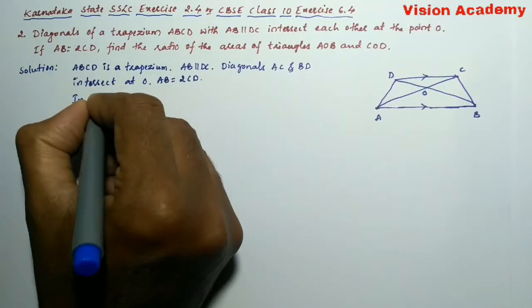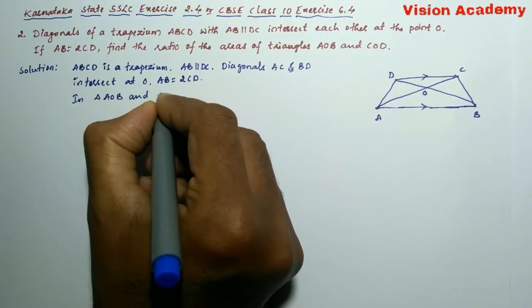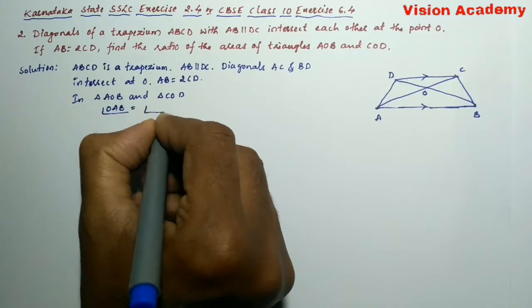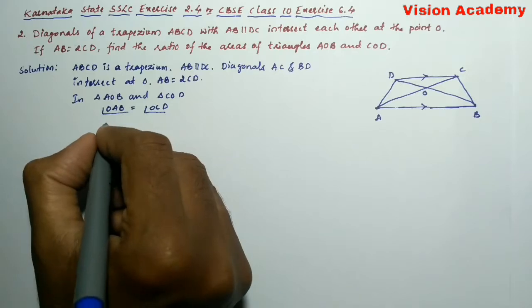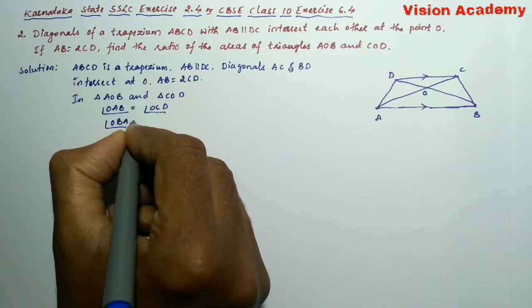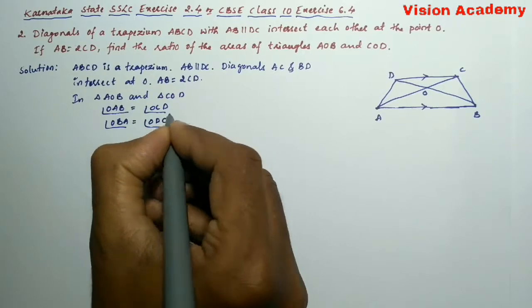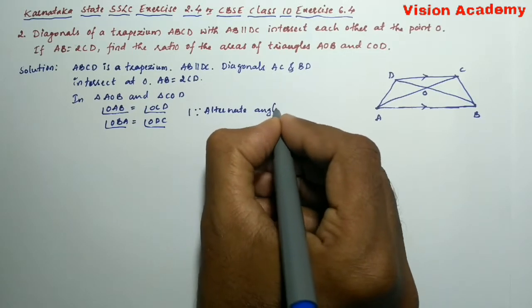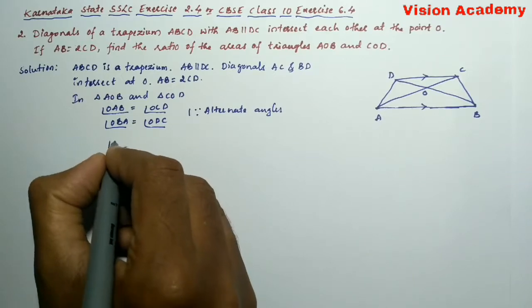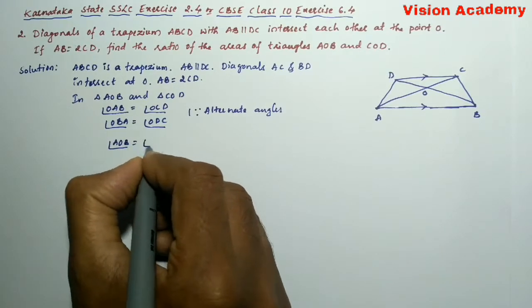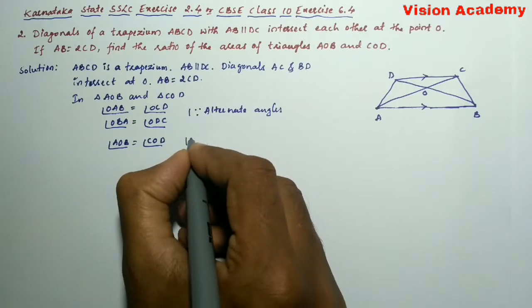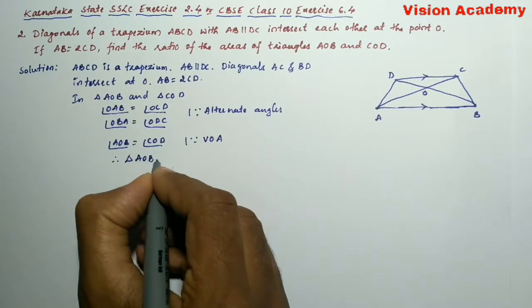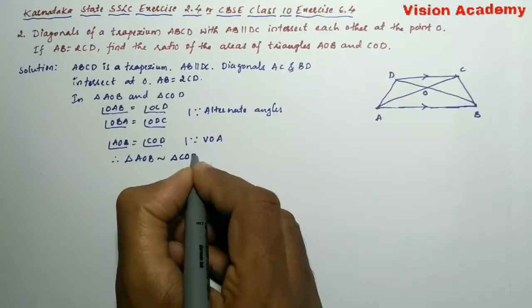In triangle AOB and triangle COD, angle AOB is equal to angle COD because these are vertically opposite angles. Therefore, triangle AOB is similar to triangle COD.